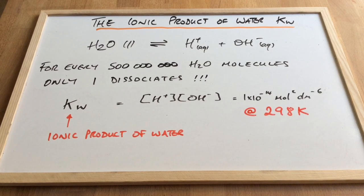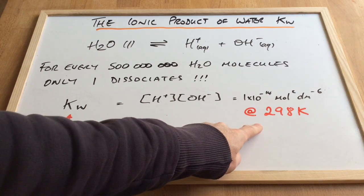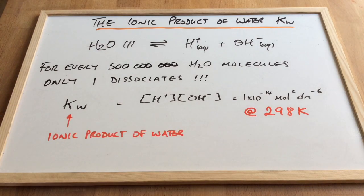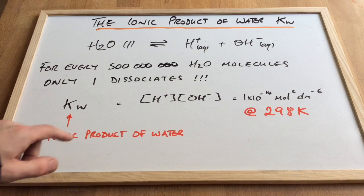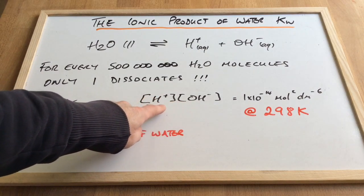Now, if you remember, equilibrium constants are affected by changes in temperature. So the value quoted is at 298 Kelvin. And KW, ionic product of water, has a value of 1 times 10 to the negative 14 moles squared dm to the minus 6. And the units, basically you're squaring moles per decimeter cubed.